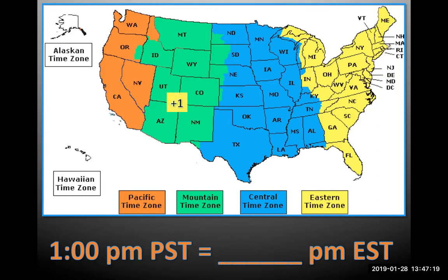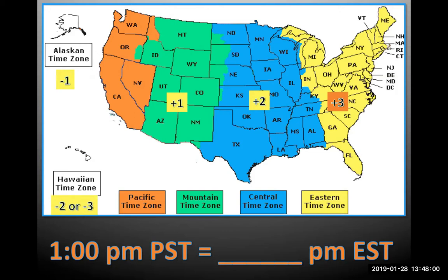In the Pacific time zone, if it is 1 o'clock, you add one hour to get Mountain time, add two hours to get Central time, and add three hours to get Eastern time. For Alaska, it's one hour behind Pacific, so it would be 12 noon. For Hawaii it's two hours behind Pacific, so it would be 11 a.m. — because right now it's daylight saving time. That's how the time zones work.